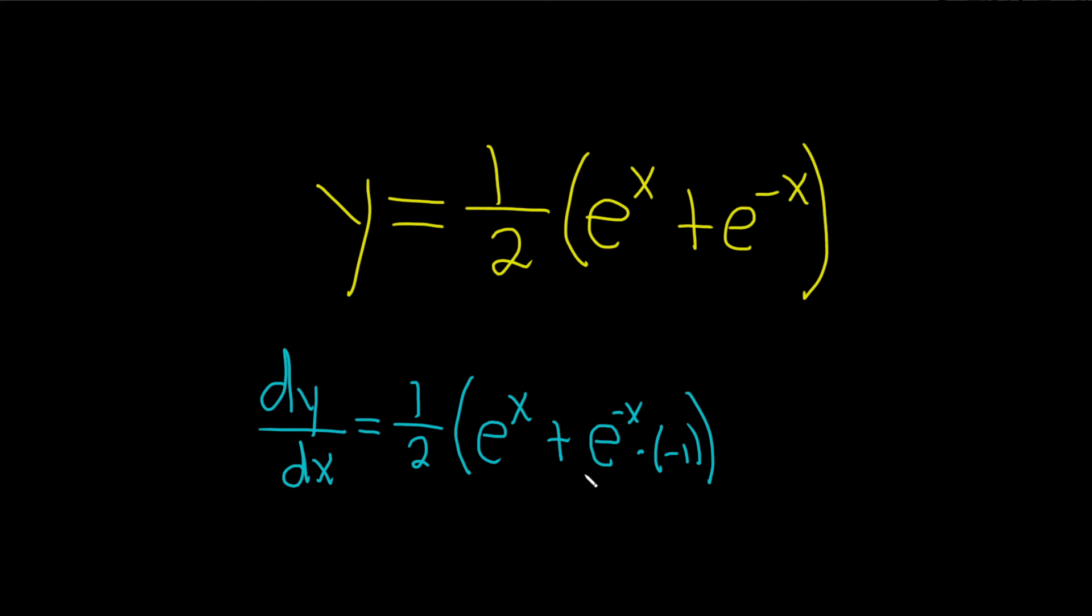And the last thing to do now maybe is make this a negative. So this is one-half parentheses e to the x minus and then e to the negative x. And that would be dy/dx.